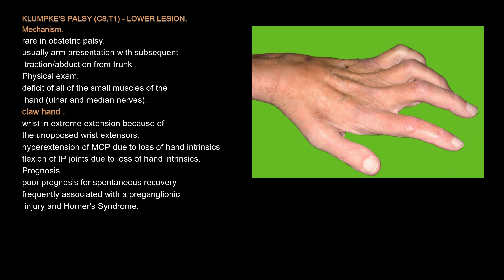Klumpke's palsy (C8-T1), a lower lesion, is rare in obstetric palsy and usually results from arm presentation with subsequent traction and abduction from the trunk. Physical exam shows deficit of all small muscles of the hand (ulnar and median nerves), resulting in claw hand with the wrist in extreme extension due to unopposed wrist extensors, hyperextension of MCP joints, and flexion of IP joints due to loss of hand intrinsics. Prognosis is poor for spontaneous recovery and is frequently associated with preganglionic injury and Horner's syndrome.